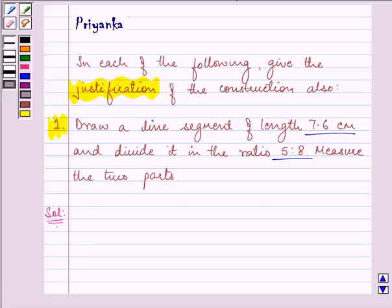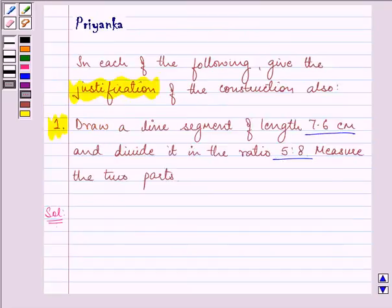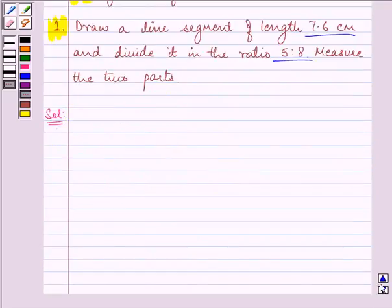We have already written down the steps of construction. I will read the steps one by one and draw the diagram simultaneously. The first step is to draw a line segment AB of length 7.6 cm.